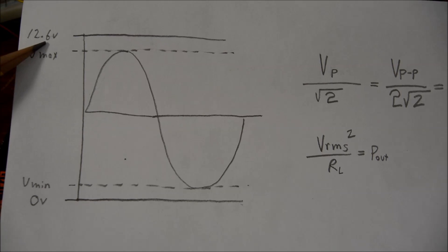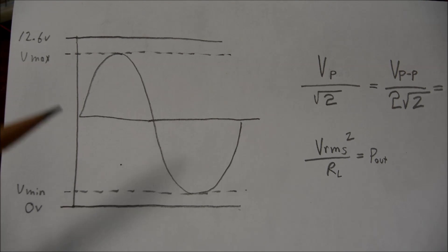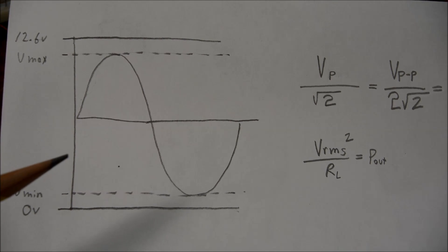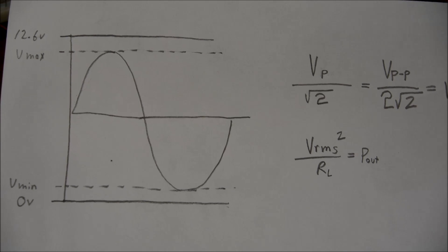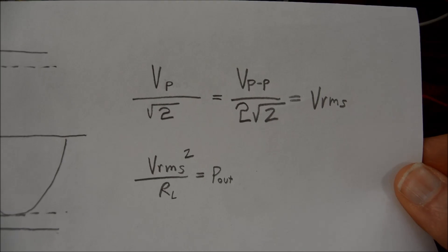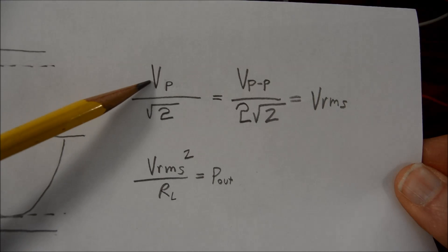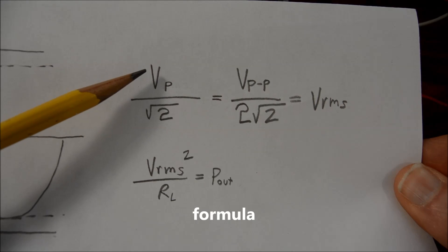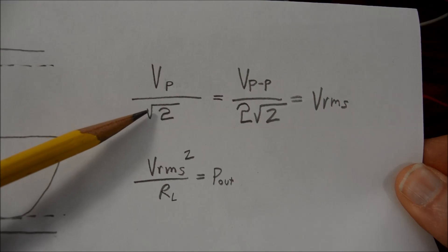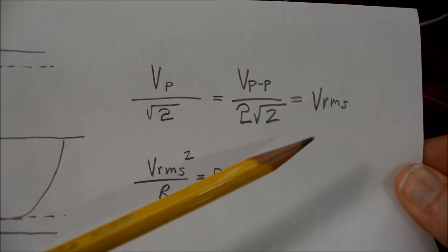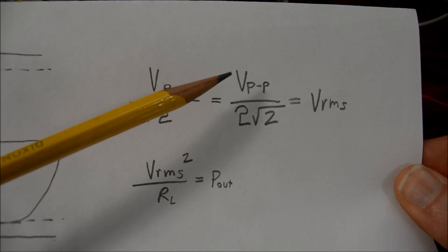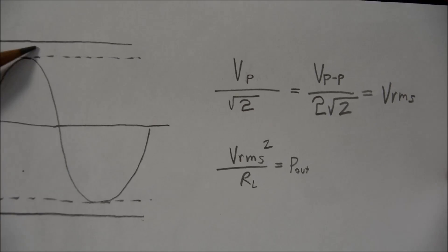We'll put 12.6 volts into them and a 4 ohm load, and we'll measure the output. Here's some calculations: voltage peak over the square root of 2 will give you the voltage RMS, or if you have the peak to peak voltage, that's over 2 times the square root of 2.